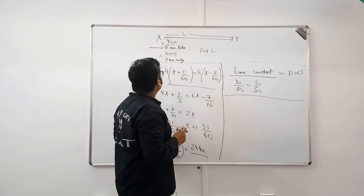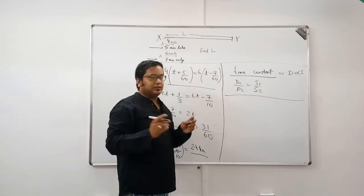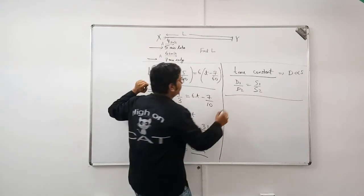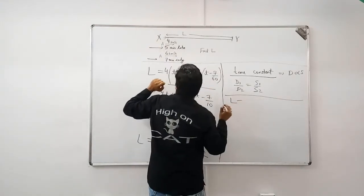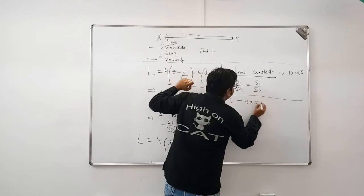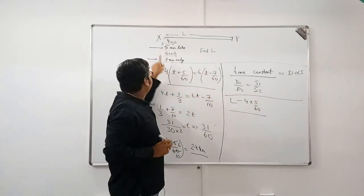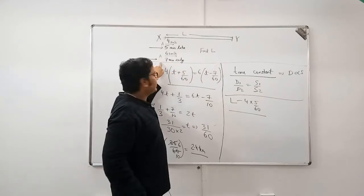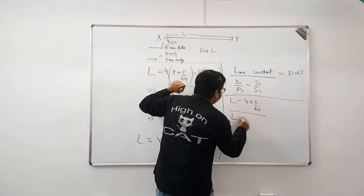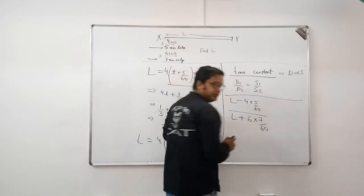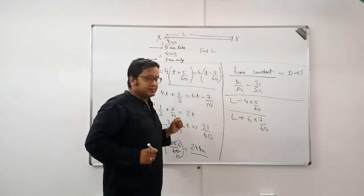So, in constant time, original time T, how much distance would A have covered? A would have covered L minus 4 into 5 by 60. And, at the same time T, A would have covered L plus 6 into 7 by 60.